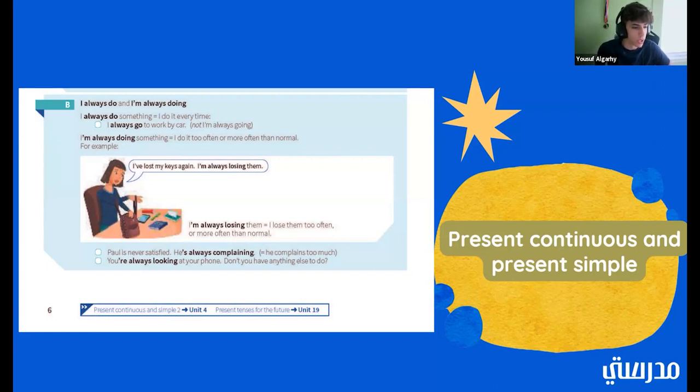So, for example, we have a lady. She's saying, I've lost my keys again. I'm always losing them. So I'm always losing means that she loses them a lot. But that doesn't have to mean she loses them all the time. If she said, I always lose them instead of I'm always. She just said, I always lose them. It means she loses them every single time. So Paul is never satisfied. He's always complaining. Which means he's complaining too much. He doesn't complain all the time, but he complains too much. You're away or you're always looking at your phone. Don't you have anything else to do? So that means, you know, they're looking at their phone a little bit too much than they should be.